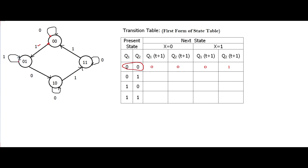For present state 01, we check only the tail end. When x equals 1, the state stays at 01. When x equals 0, we follow the other tail end, which moves to next state 10. So when x equals 0, the next state is 10, and when x equals 1, it maintains the same state 01.